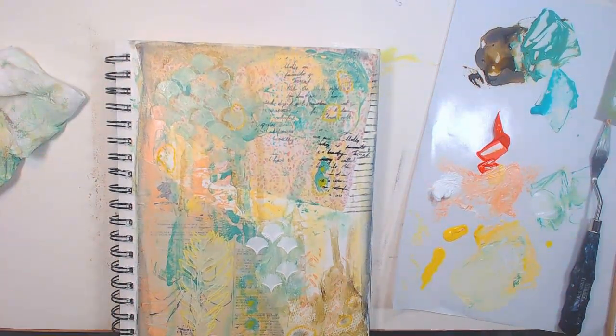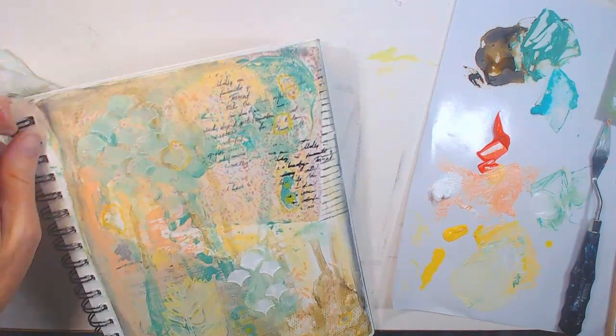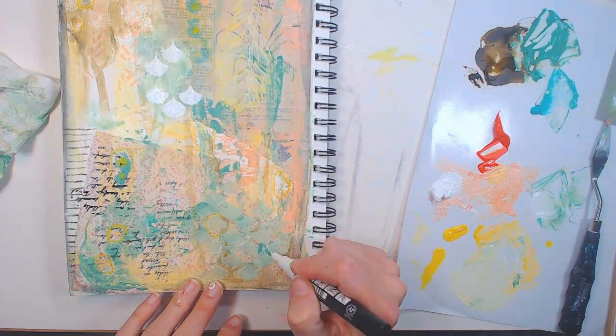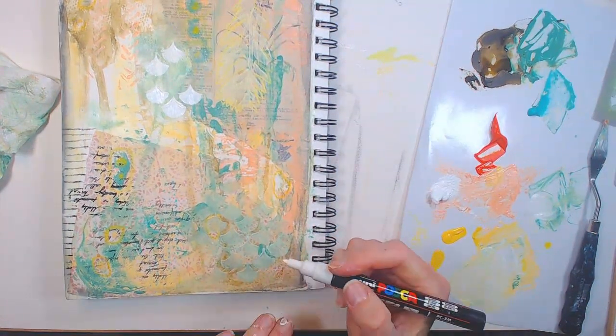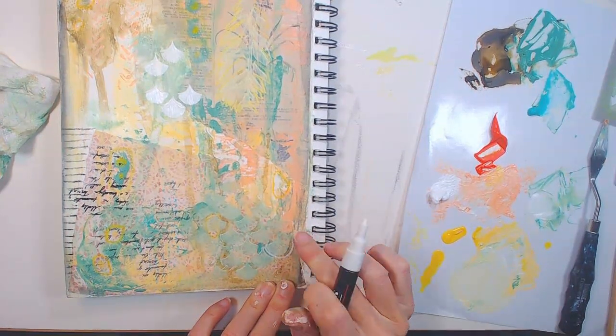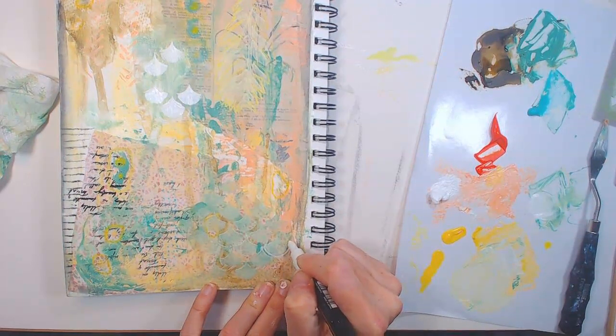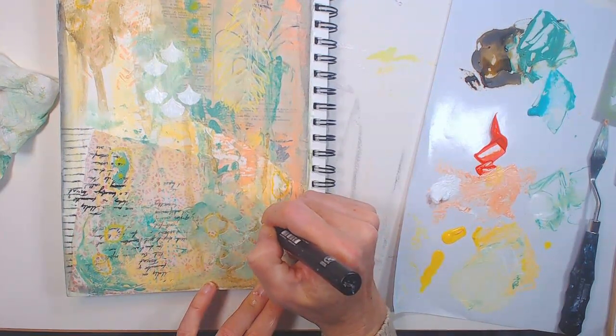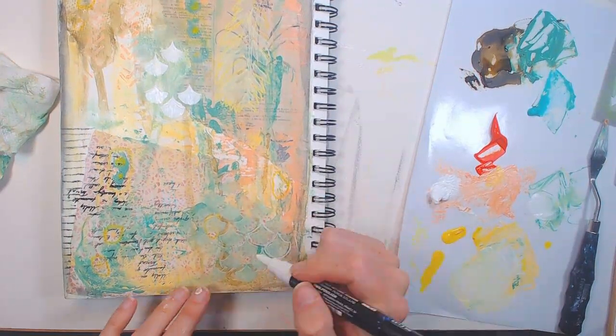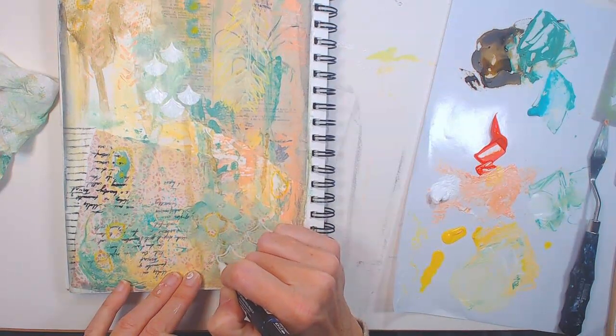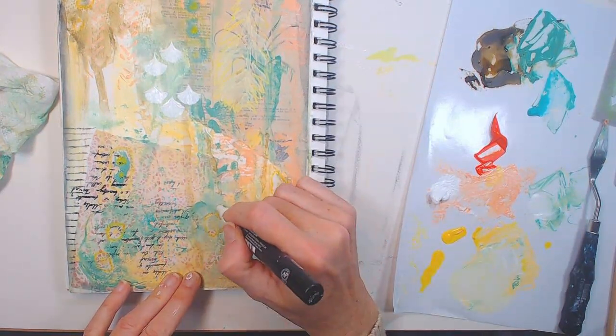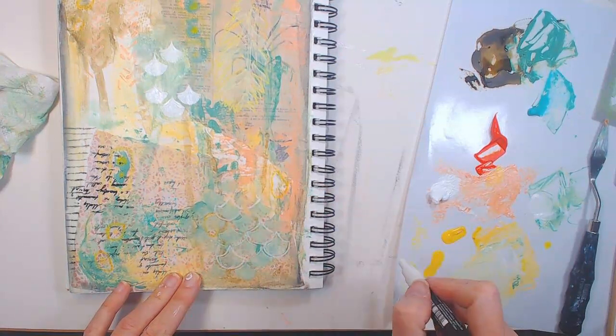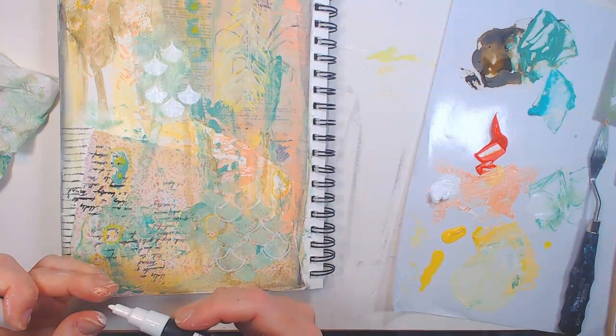So I think what I'll do is outline this. Let's see how it looks. This is the thicker line for the Stabilo. They come in all different fine, medium, so you just have to figure out what one you like. I like the medium and I like the fine for really delicate marks. This is fun. Try not to get it real clogged.